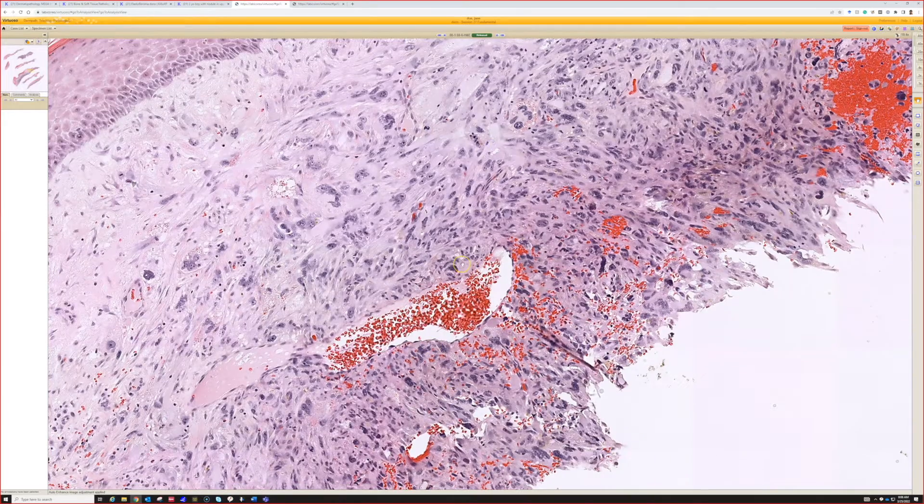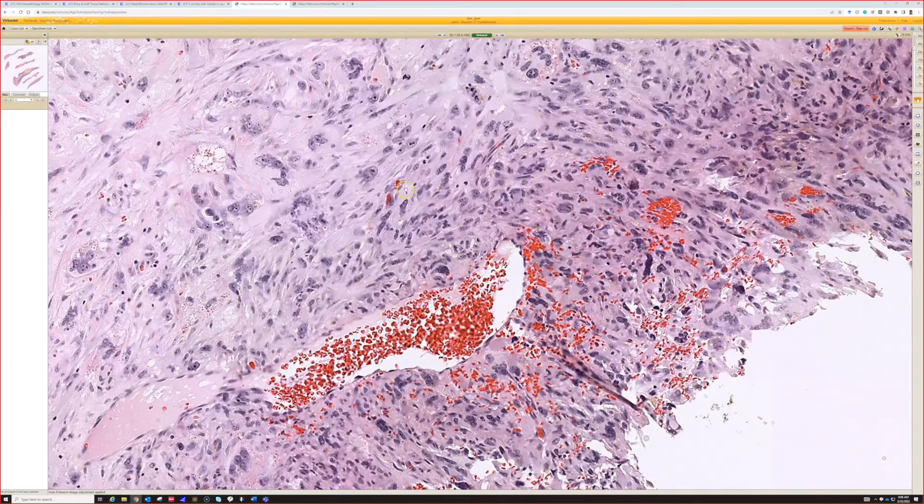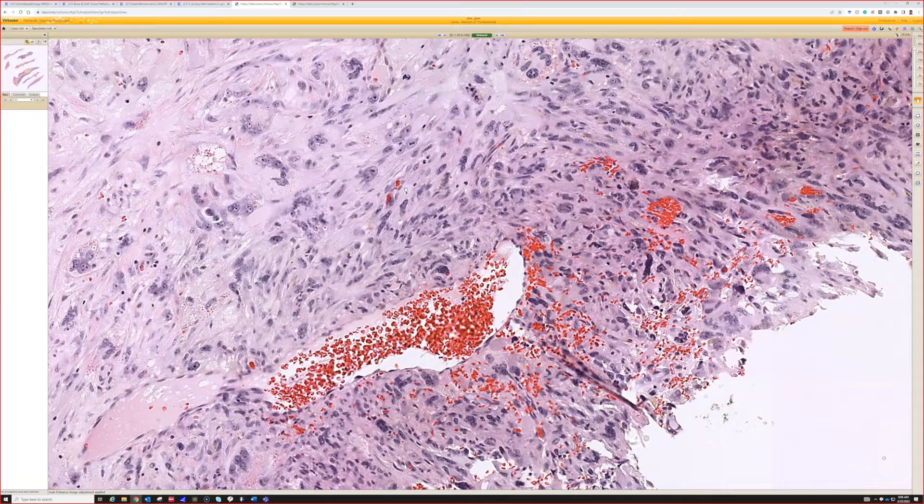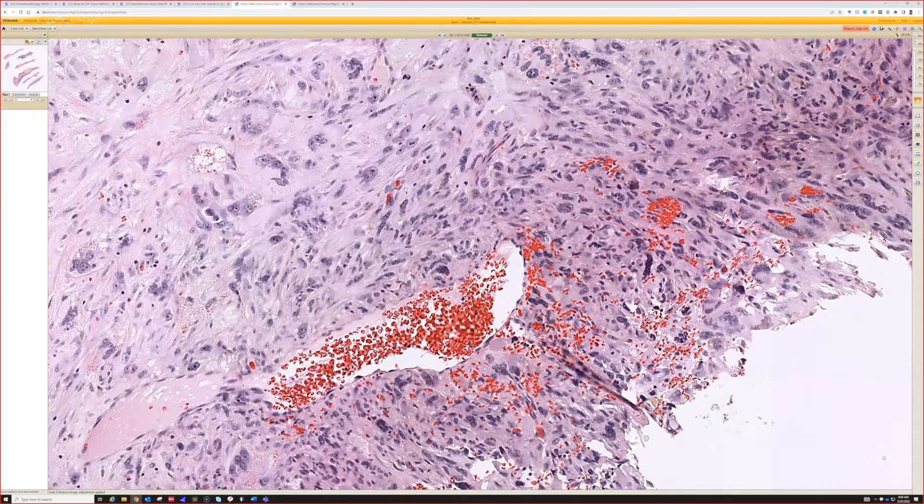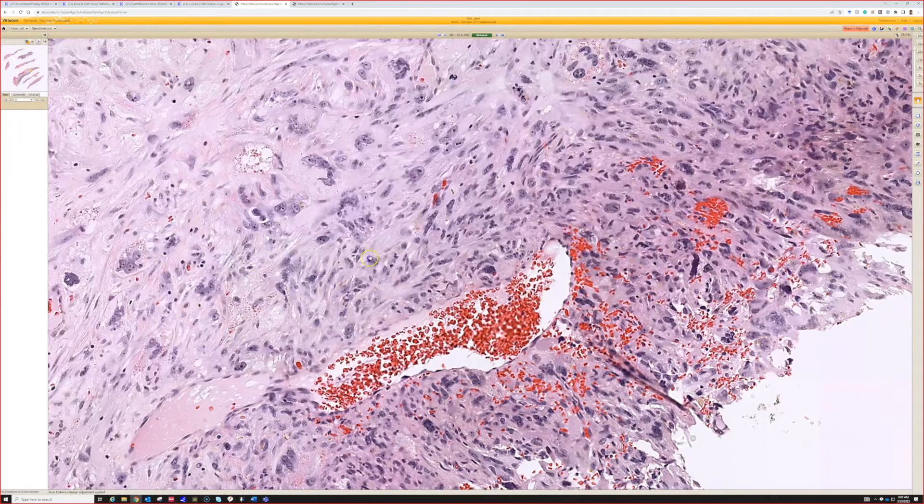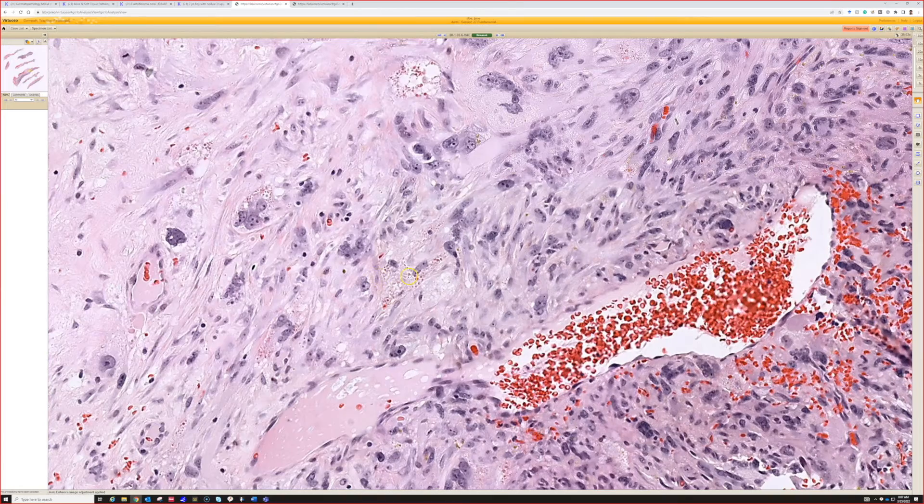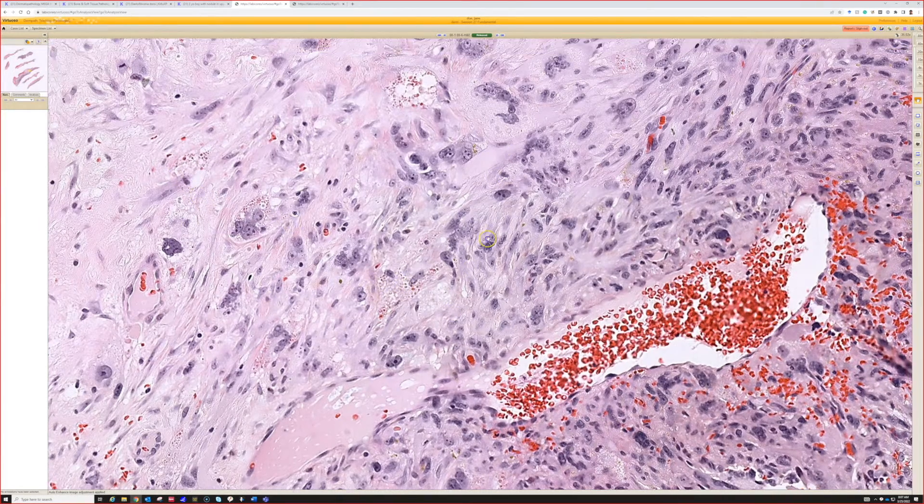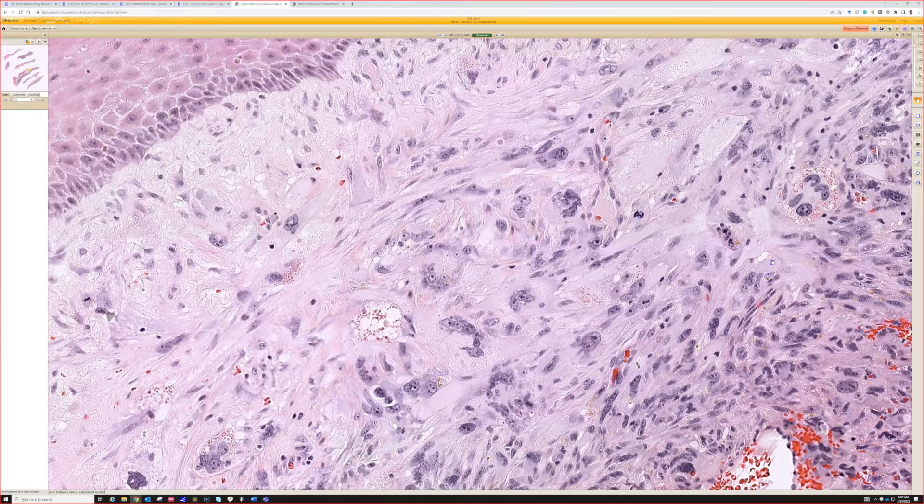And you see ugly cells that basically look like a high grade sarcoma, super pleomorphic and ugly. Sometimes they have some foam, which is where the name atypical fibrous xanthoma came from, but I see many of these that don't have any foam. This is a little bit foamy here, but I don't think that's a requirement anymore.